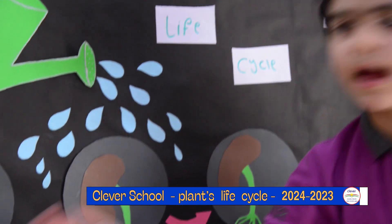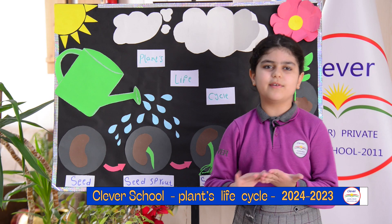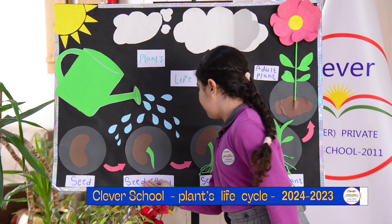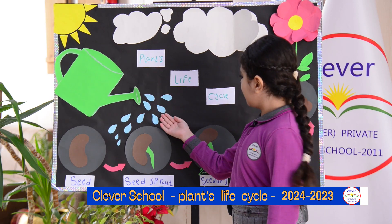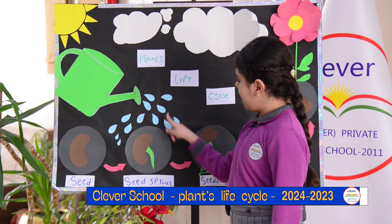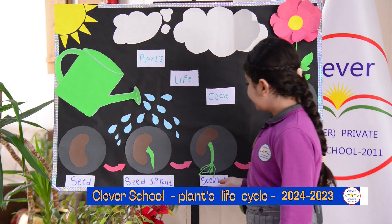Start from seed. We have to put it in the dirt and cover it. Seeds grow. We water the seeds and they grow into a seedling.